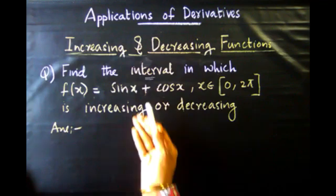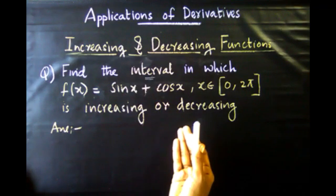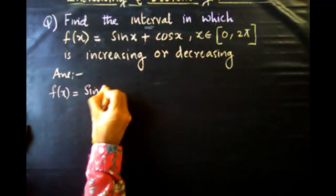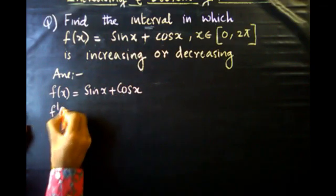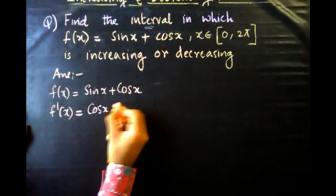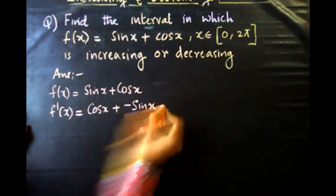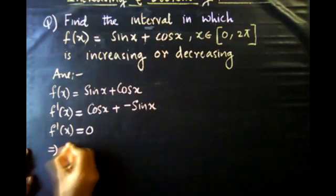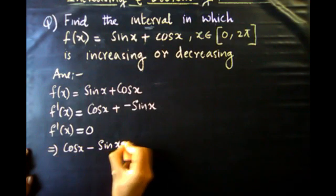If we use this function's derivative and set it to zero, the derivative of sin x + cos x is cos x minus sin x. So f'(x) = cos x minus sin x. We set f'(x) equal to zero.